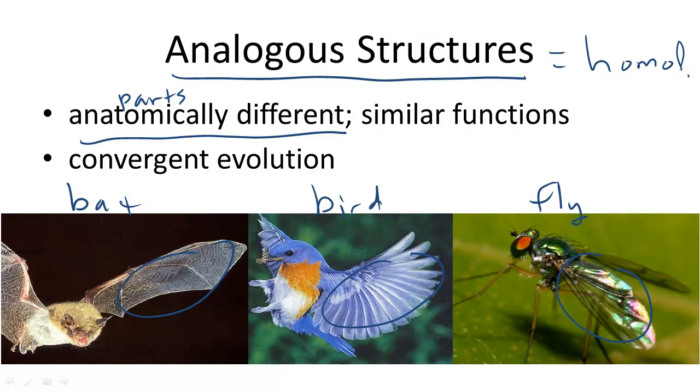These organisms' wings are analogous, because although they have different anatomies, their functionality, or their physiology, is similar. So they have similar purpose. For example, they can all fly.